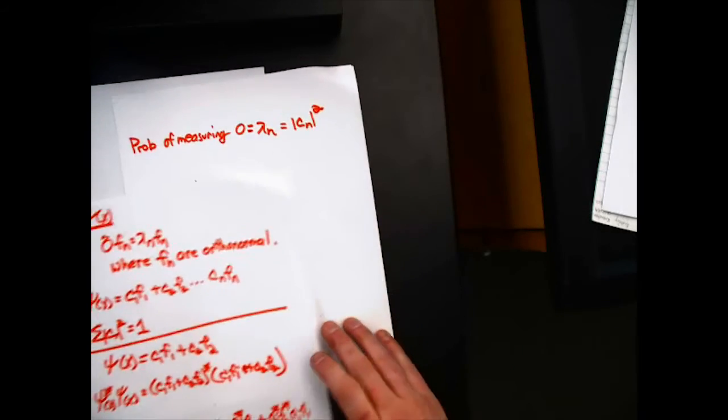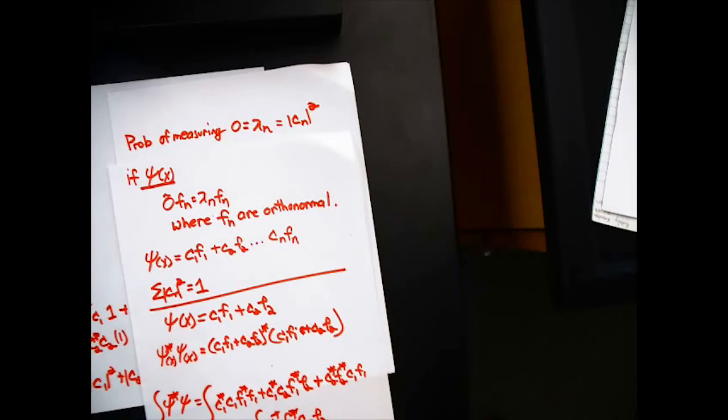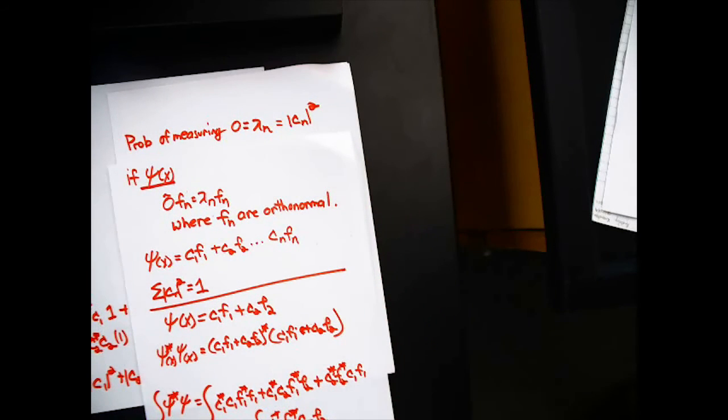So for example, if my operator in this case happened to be the Hamiltonian and I wrote my wave function as c1 psi 1 plus c2 psi 2, my probability of measuring the energy equal to E1 would be c1 squared. The corresponding probability of measuring E equal to E2 would be the magnitude of c2 squared.